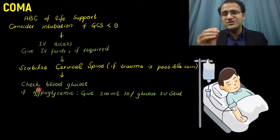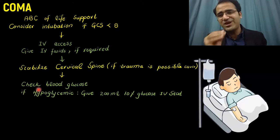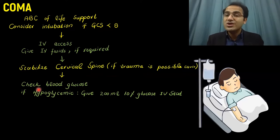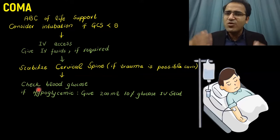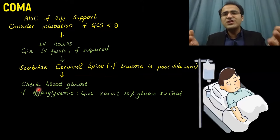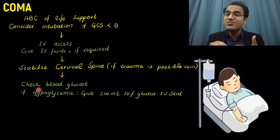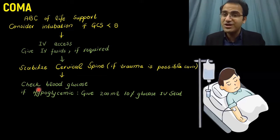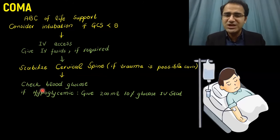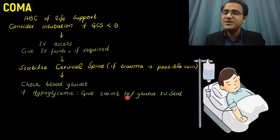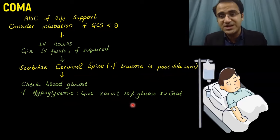Hypoglycemia is a very important cause. Most of the time, you will find diabetic patients taking insulin or oral hypoglycemic drugs who present to the emergency department in a deeply unconscious state, and their RBS comes out to be 30 or 40 — severe hypoglycemia. Check their blood glucose and if they are hypoglycemic, give 200 ml of 10% glucose IV stat.